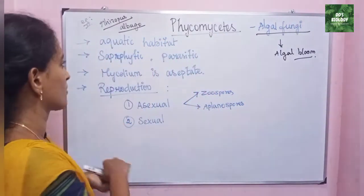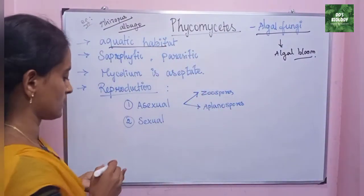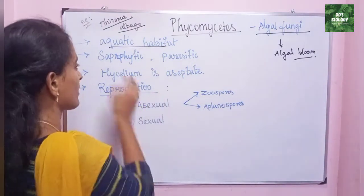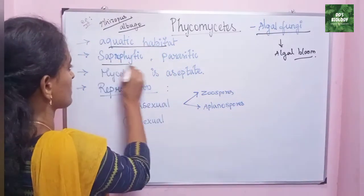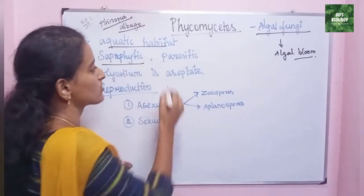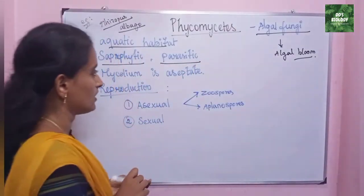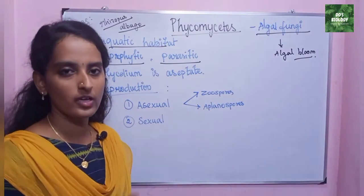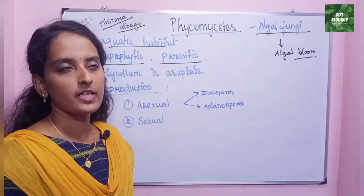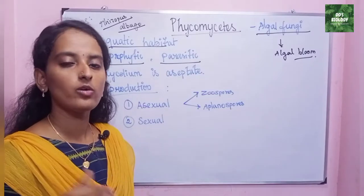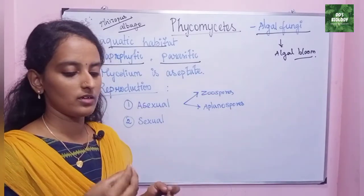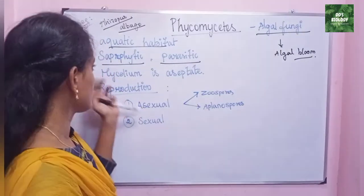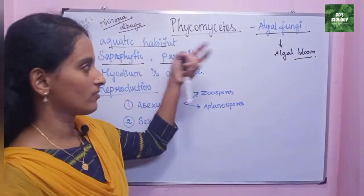Phycomycetes aquatic habitat. The next fungi character is saprophytic. So Phycomycetes nutrition is saprophytic and also parasitic. Saprophytic fungi of Phycomycetes are found on wood, logs, and moist areas — in moisture areas, on dead and decaying matter. So this is saprophytic and parasitic nutrition.